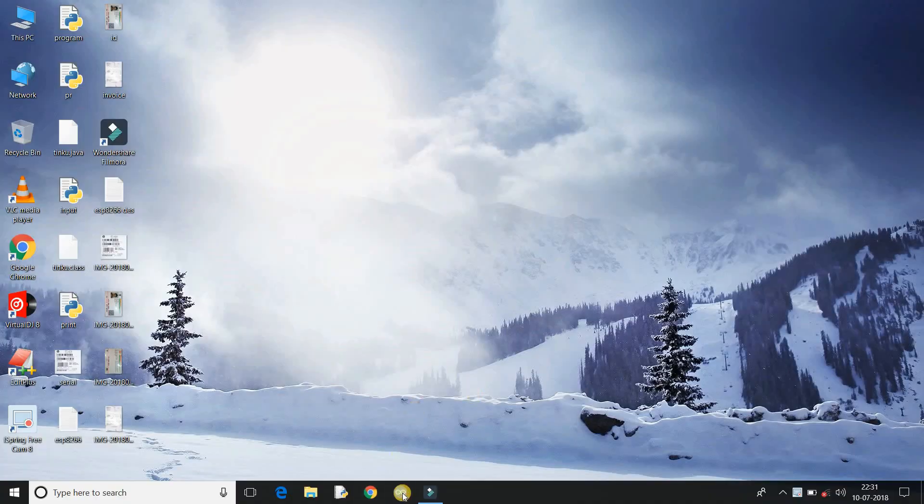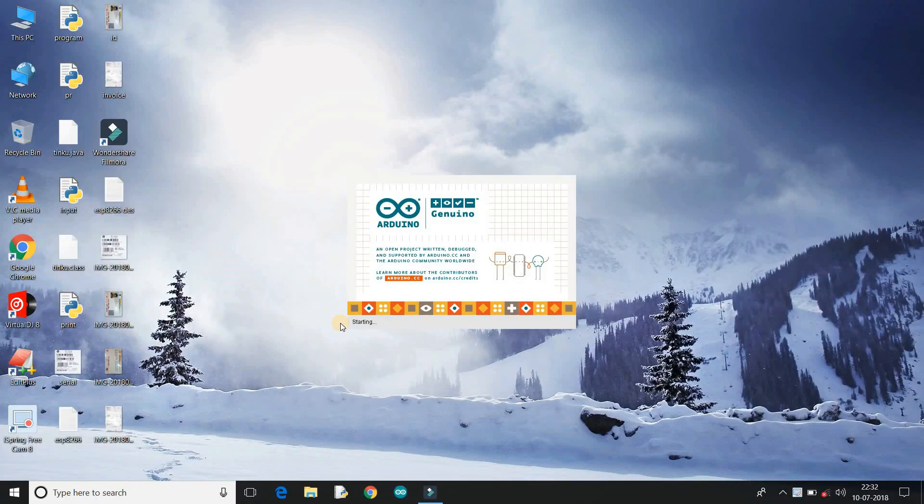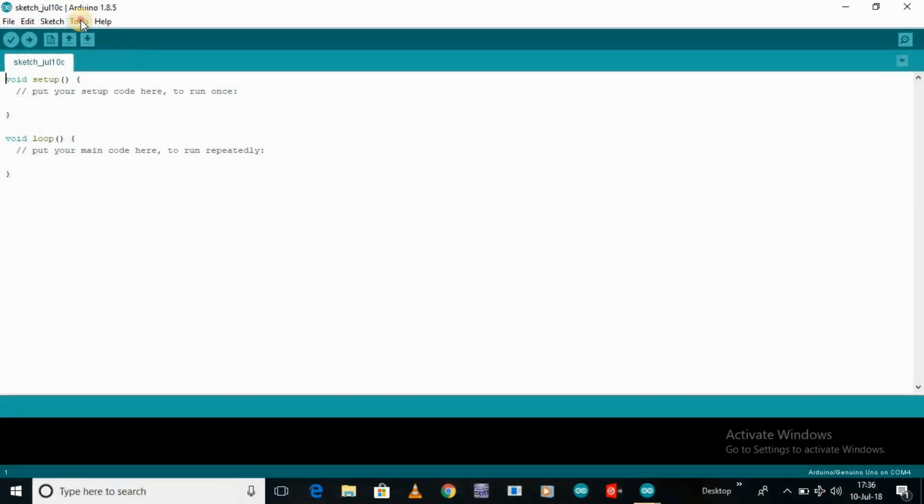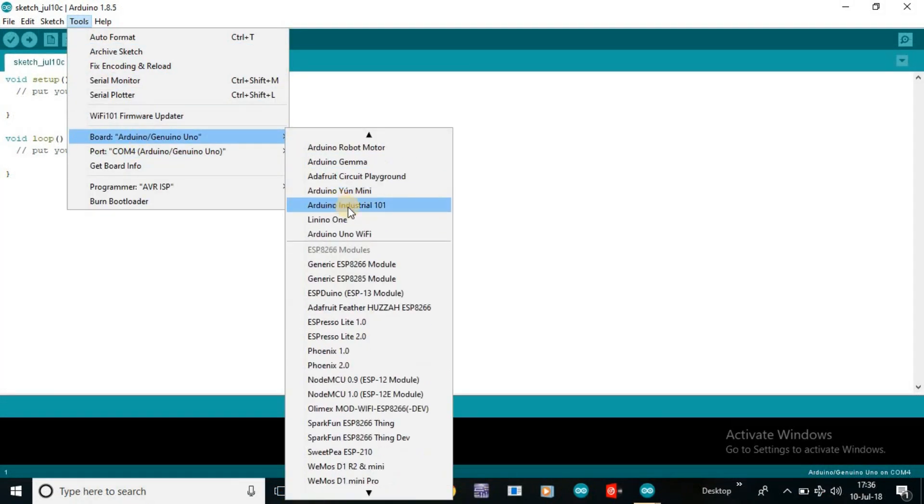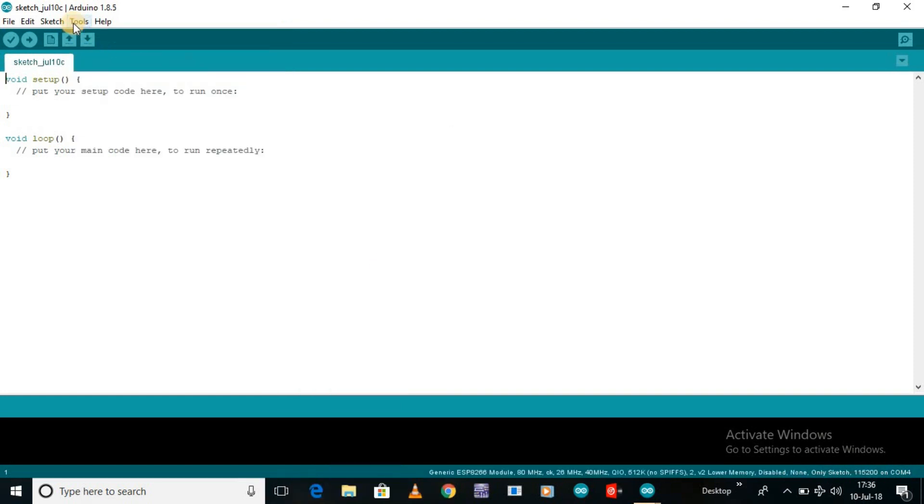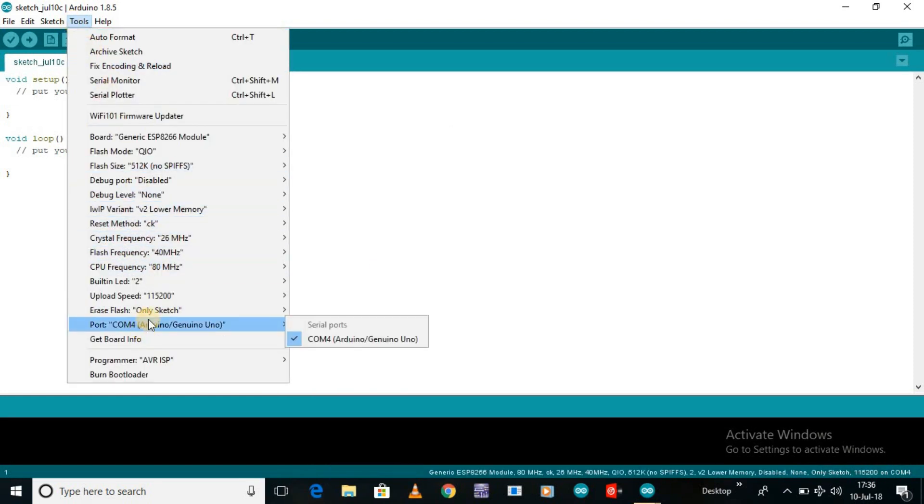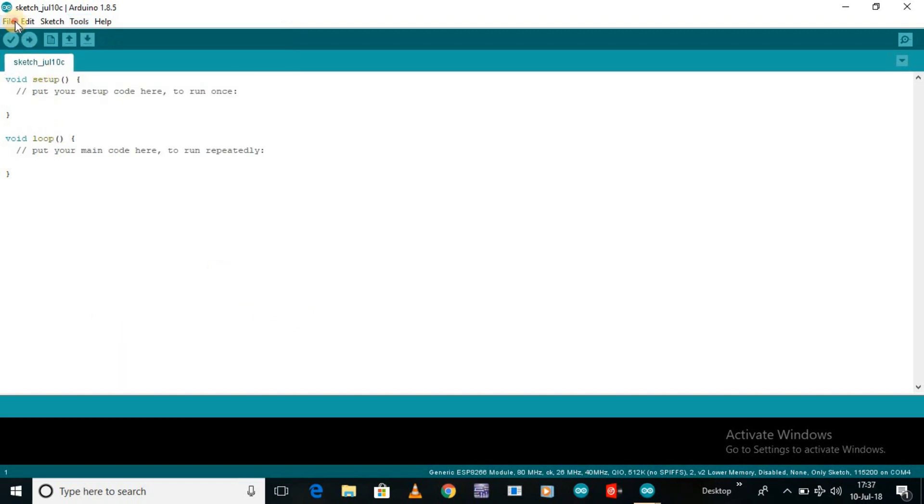In the board option, go to Tools, then Board, look for Generic ESP8266. Select the Generic ESP8266 board. Select the appropriate port number in the IDE. Now open the blink sketch.